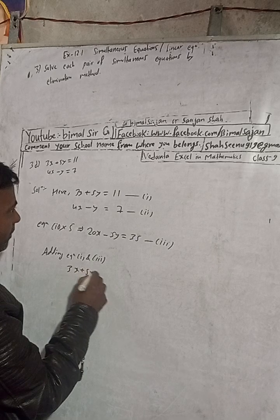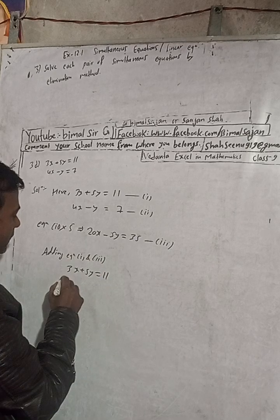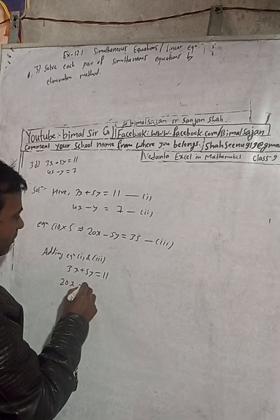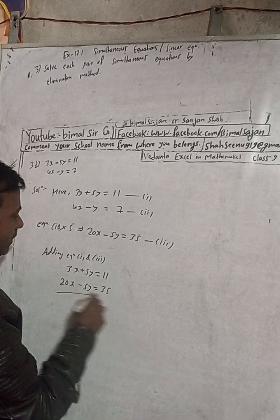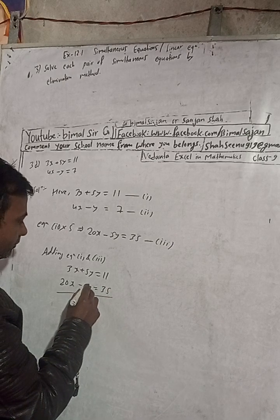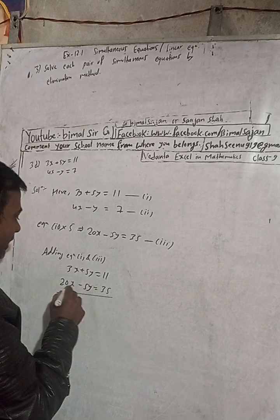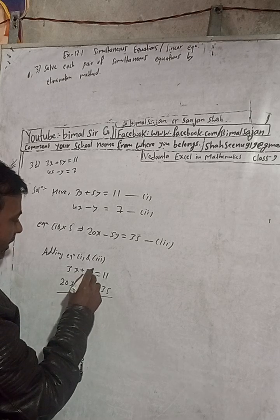3x plus 5y is equal to 11, and this is here 20x minus 5y is equal to 35. Here we can see plus 5y minus 5y, so this is cancelled.